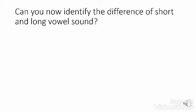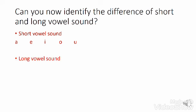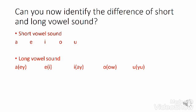Let's have a short revision. For short vowel sound pronunciation, we have A, E, I, O, and U. And for the long vowel sound pronunciation, we also have A, E, I, O, and U.